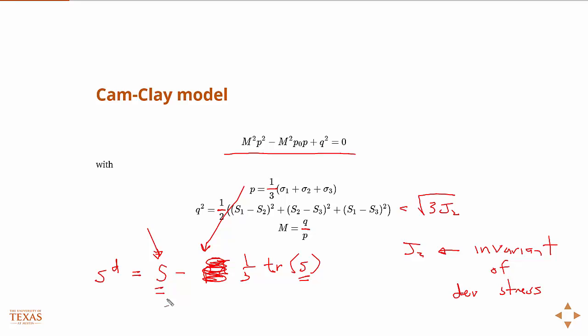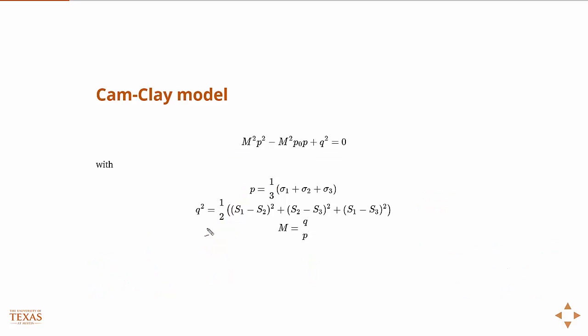I'm not going to test you on this, I just wanted to write it down. So J2 is then the second invariant of this guy, and if you work it out in terms of the principal stresses, then it's just this, where I've squared the left-hand side to get rid of the square root. And then M is the slope, Q over P.